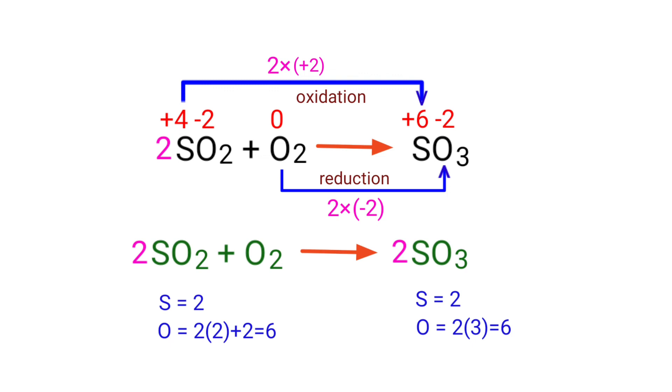The equation is now balanced. There are two sulfur atoms and six oxygen atoms on both sides.